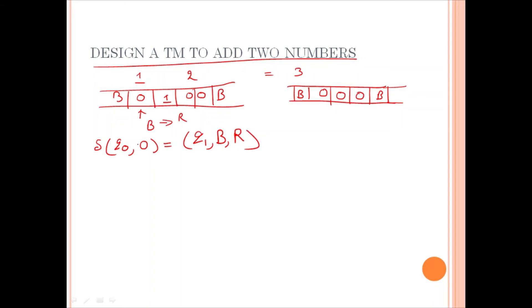And this, we are going to have 0 or we are going to have 1 or we are going to have blank. So, what do we have to do? Delta, q1, 0. If we encounter 0, then just move towards the right side, writing 0.